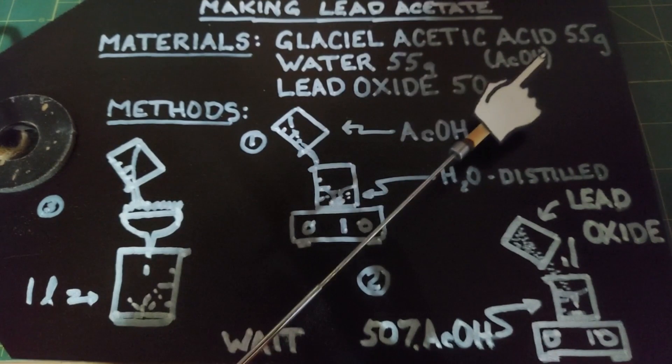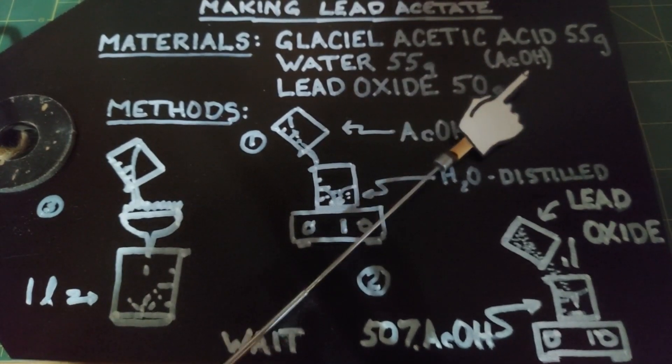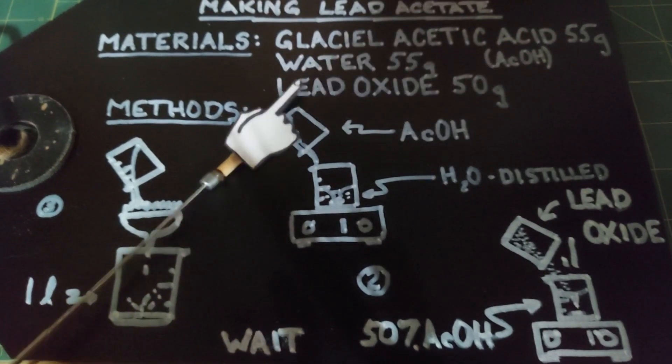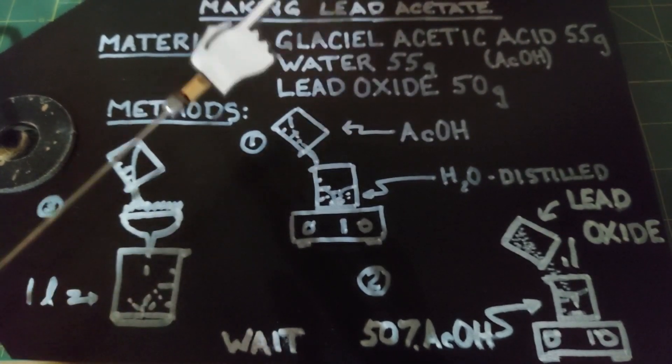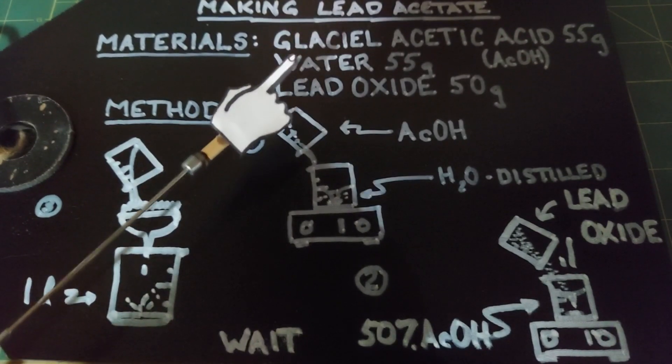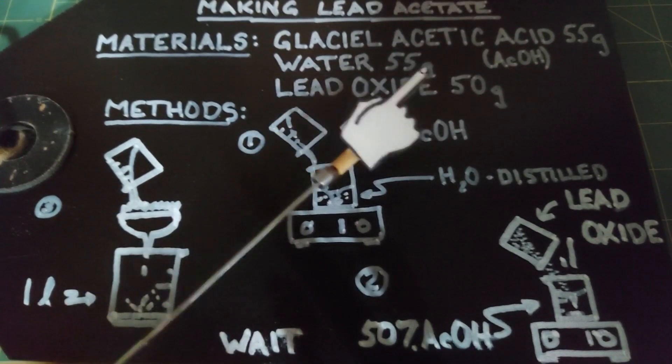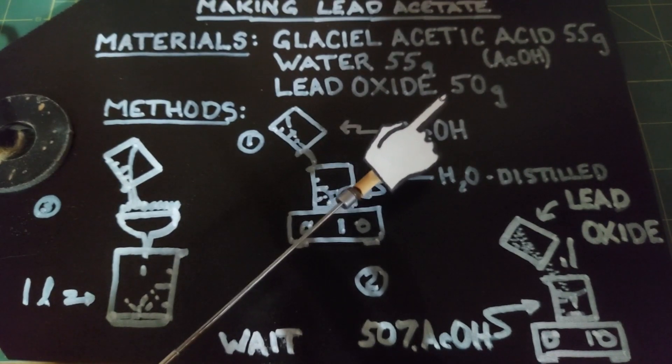The materials that we need are glacial acetic acid, hereafter known as AcOH which is an acceptable notation, 55 grams by weight; water 55 grams by weight; and lead oxide 50 grams. These two are to make a 50% solution of acetic acid by weight, and of course this one is to be added at the very end.